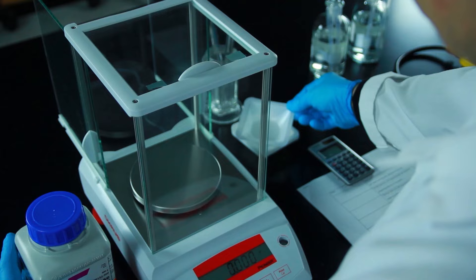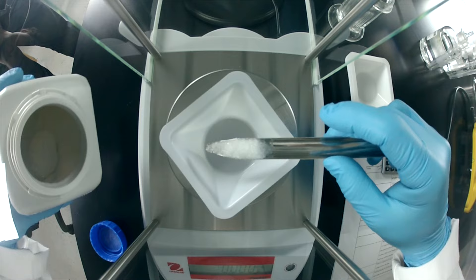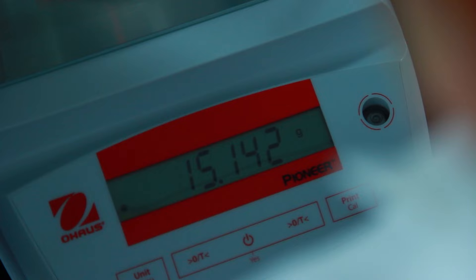Next we need to weigh out the Tris. Place the weigh boat onto the balance pan and press the tare key. Use a lab scoop to add 15.14 grams of the powdered Tris buffer. The measurement should be within plus or minus 0.02 grams.